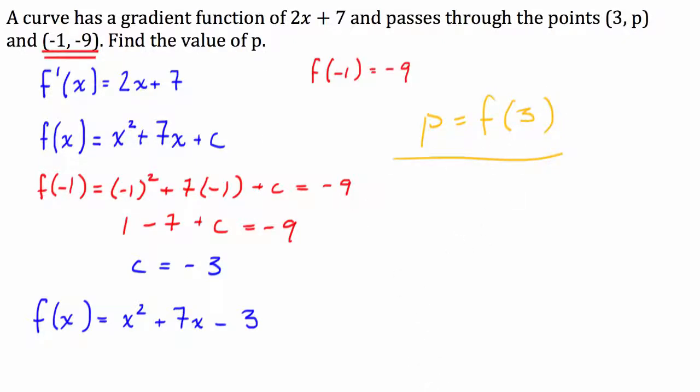So, all we're going to do is we're just going to go f of 3 is equal to 3 squared plus 7 times 3 minus 3.